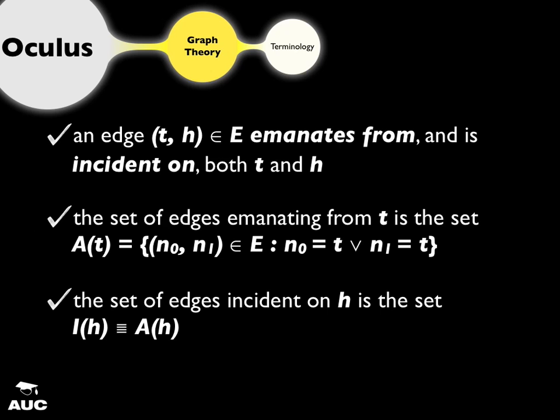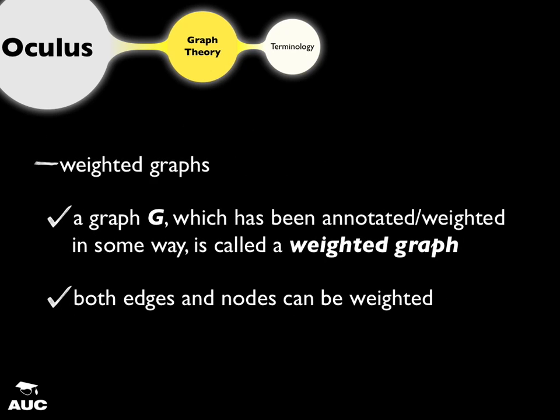The important thing to note is that within the edge set of an undirected graph, you have distinct nodes representing the edge set. The set of edges incident on any particular head must equal the same number as the emanating edges from any particular tail. We also have weighted graphs — you can associate labels or weights to either a node itself or to an edge in a graph.